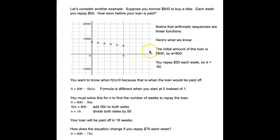Here's how we're going to set up that equation. We want to know when the amount of the loan is zero. We started with $800 and we're paying $50 every week. Since we started at week zero, we have n, not n-1 like we had in our previous formulas.